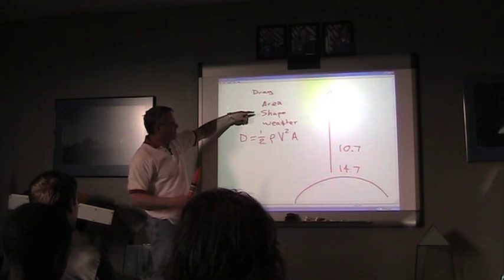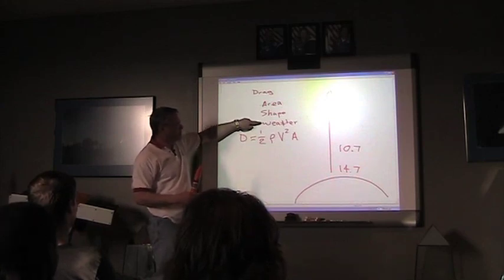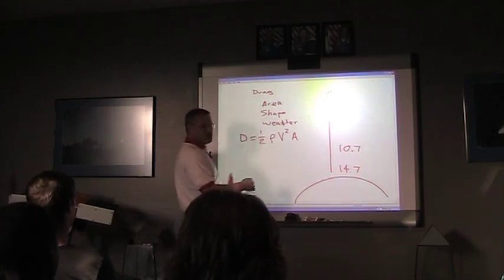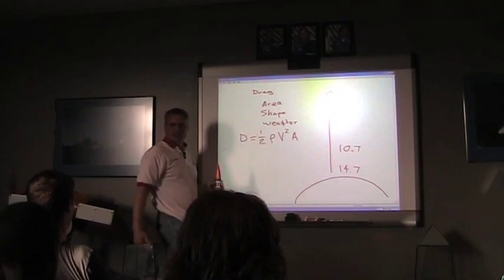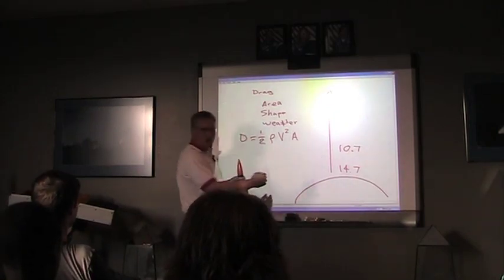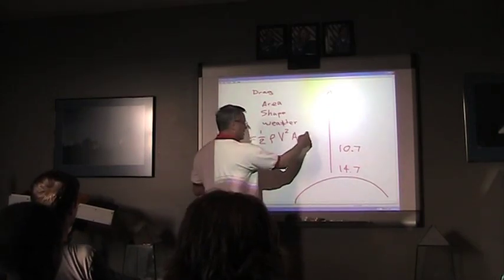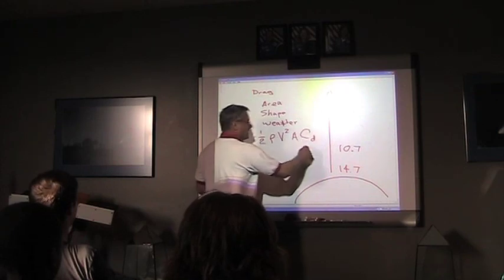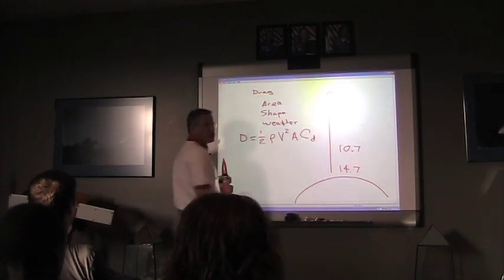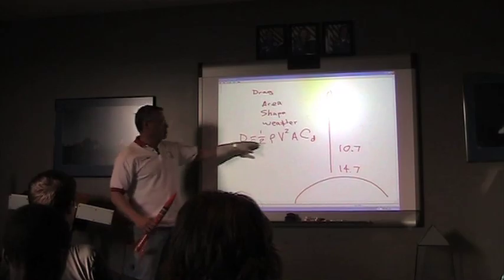What's this one that we don't have here yet? We have area, we have weather, shape. And how do we throw shape in there? It's a funny number. It's called the coefficient of drag. And we use Cd. Cd is coefficient of drag. So that is our drag formula.